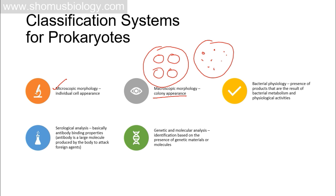Colony appearance is very important. Some colonies are white, some yellowish, green, red — many different colors. The size of the colony, the distribution pattern, the texture, and overall appearance all carry weight in identifying an unknown bacterium, because each specific bacterial colony has its unique mode of appearance.